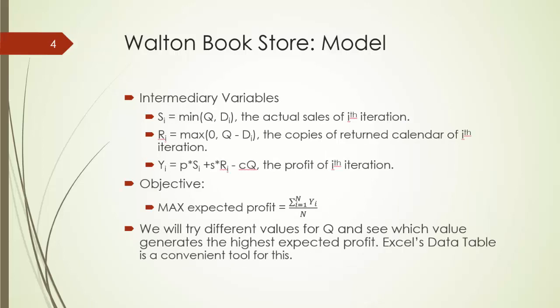Let's look at some of the intermediary variables we are going to use. S_i is equal to the minimum number between q and d_i — that is the actual sales of the i-th iteration. r_i is given by the maximum value between 0 and q minus d_i — that is the copies of calendars returned in the i-th iteration. y_i is the profit of the i-th iteration: it is given by unit price p times sales s_i, plus s times the number of copies returned r_i, minus the unit cost c times order quantity q. In the end, we would like to maximize the expected profit, which is the average profit of all N repetitions.